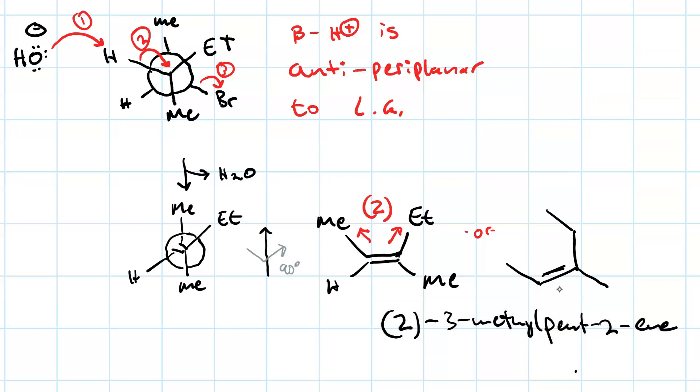So our sole product is Z-3-methylpent-2-ene. We do not get any of the E isomer, because we only had one beta proton to remove. So in this case, E2 is stereospecific.